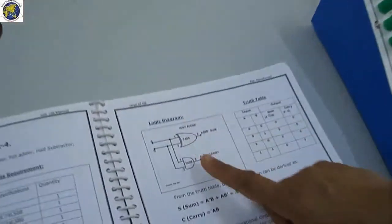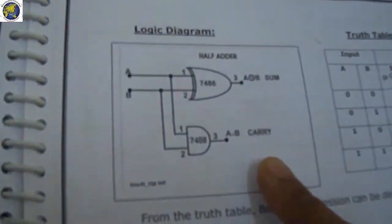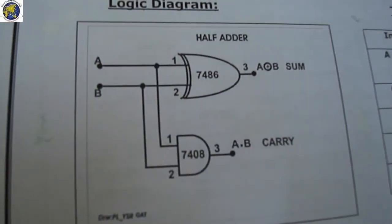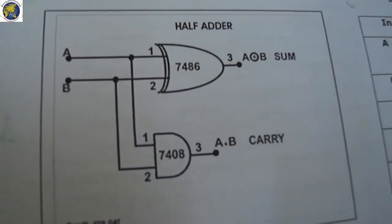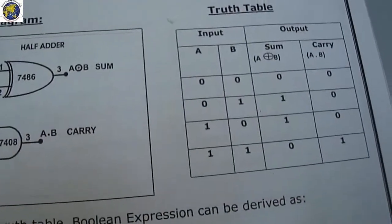This is the logic diagram of the half adder circuit. And this is the truth table.